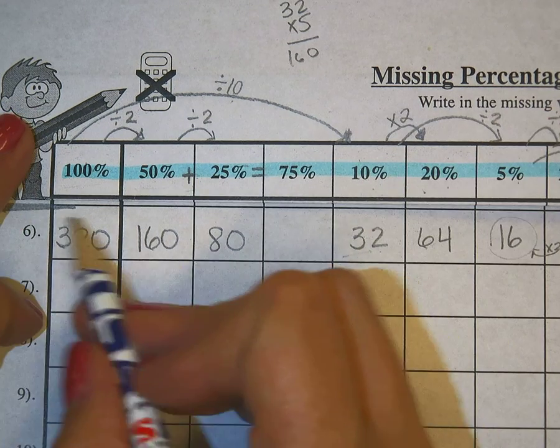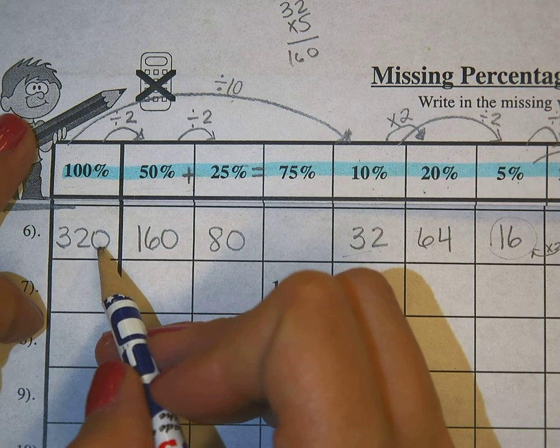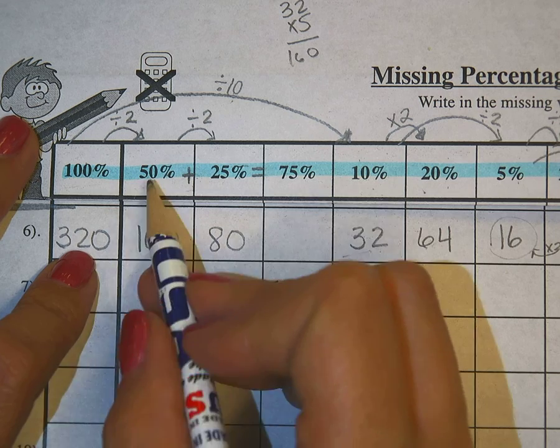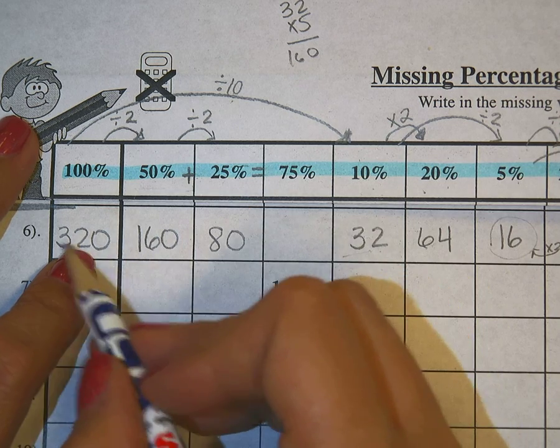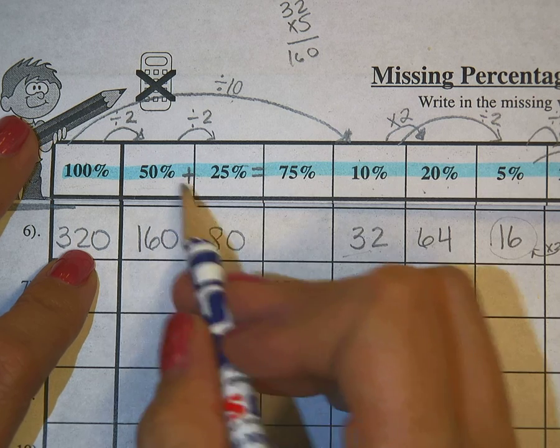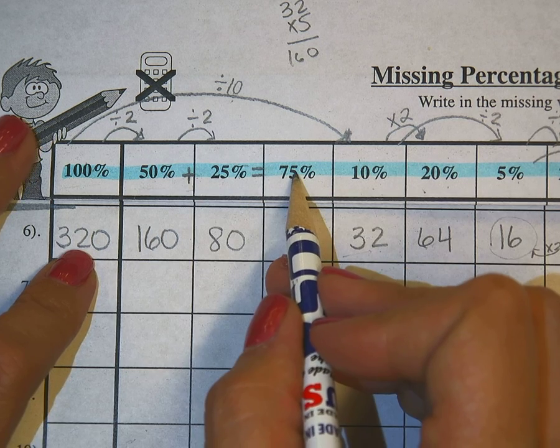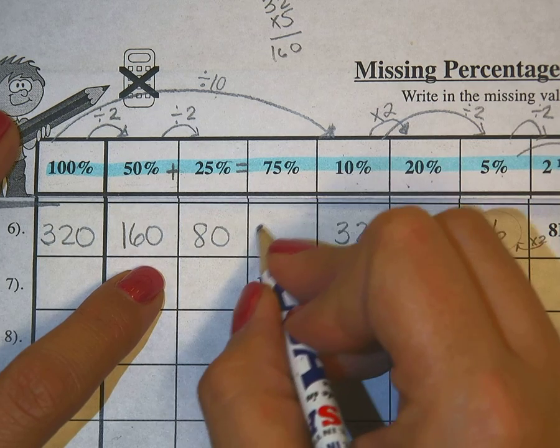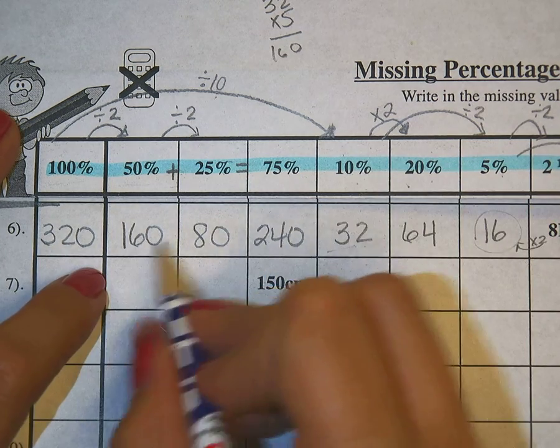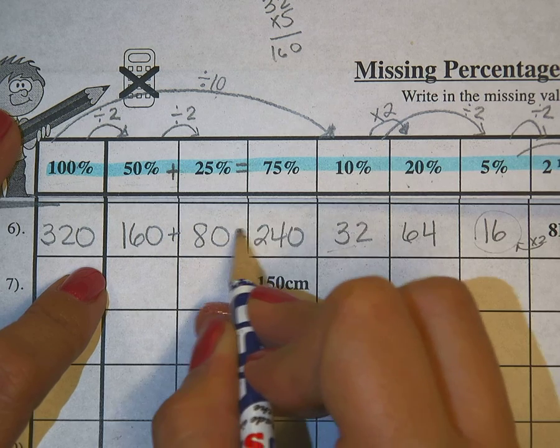And remember, all of these now are representations of portions of 320. So 50% of 320 is 160. 25% of 320 is 80. I can add these two together to get my 75%. So this is 240, because 160 plus 80 gives me 240.